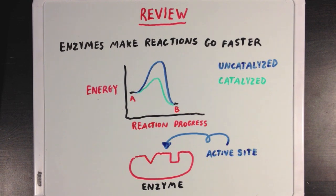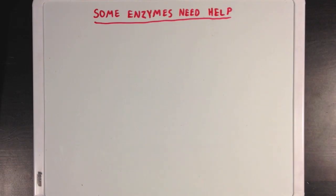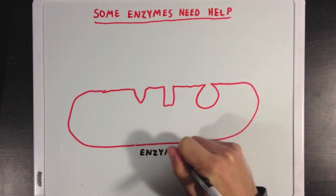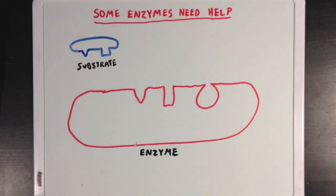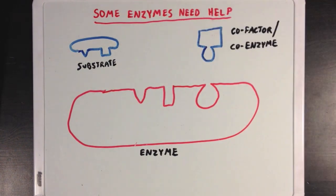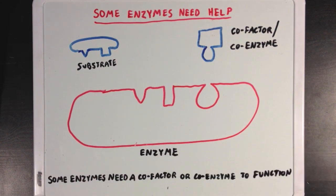Now, not all enzymes are able to catalyze reactions on their own, and some need a little help. So if we have our enzyme here trying to react with our substrate over here, sometimes something called a cofactor or a coenzyme will be needed, which will also need to bind to the enzyme in order for it to function properly. And we're going to go over what coenzymes and cofactors are, and exactly how they work.